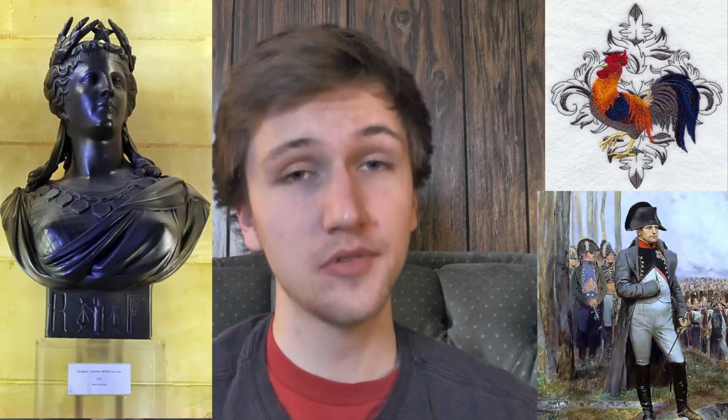Some national personifications of Japan are a samurai, and occasionally Amaterasu, who is a Shinto god. Some personifications of Italy are Italia Turrita, and occasionally Caesar or Augustus — and who wouldn't want a Roman Emperor representing them? A personification of Portugal is Zé Povinho. Some national personifications of France are Marianne, Napoleon, and a Gallic rooster. And lastly, some national personifications of Ireland are Hibernia and Grace O'Malley.